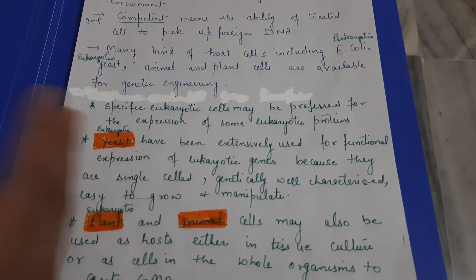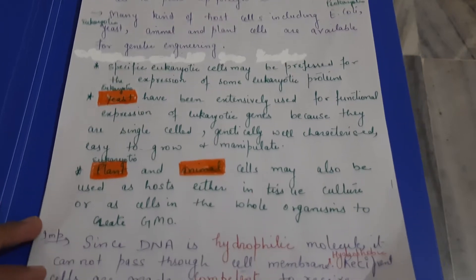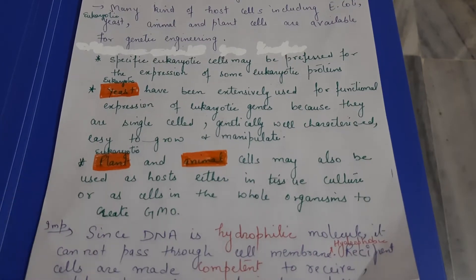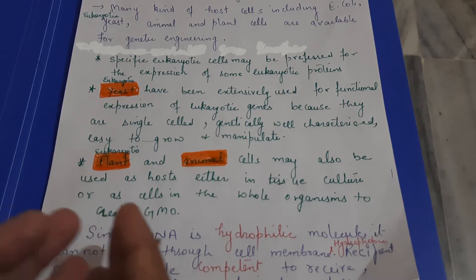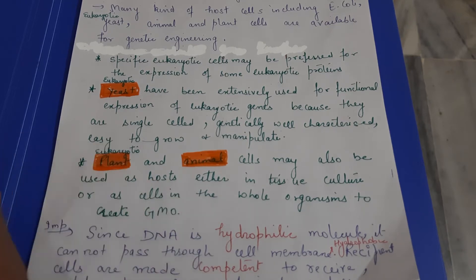We also use plant and animal cells as a host, mainly using tissue culture techniques. When we develop a genetically modified organism, we can use plant and animal cells as well.